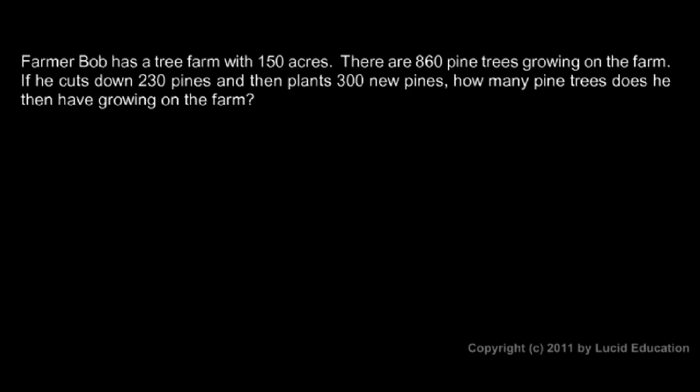Here's an application, a real-world problem where these concepts prove to be useful. Farmer Bob has a tree farm with 150 acres. There are 860 pine trees growing on the farm. If he cuts down 230 pines and then plants 300 new pines, how many pine trees does he then have growing on the farm?